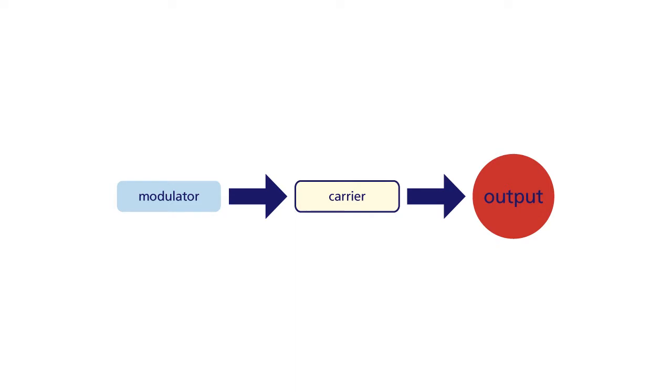So far, we've looked at FM sounds created by a simple two operator stack with a modulator and a carrier. As you will have heard, this combination can create a very wide range of tones, but this is just the start. With most FM synthesizers, you get more than two operators and there are a number of ways you can organize the operators.